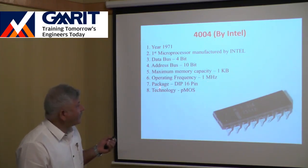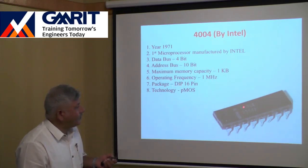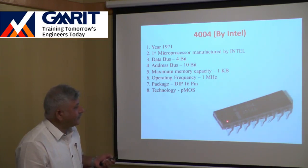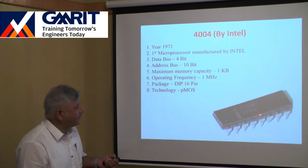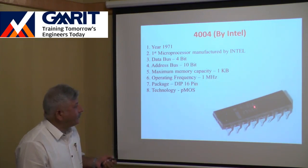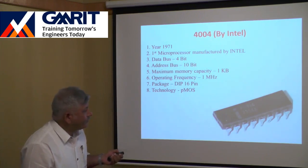The package used was a dual-in-line package (DIP), with pins on both sides. The total number of pins on the 4004 processor is 16. To find pin number 1, locate the notch on the IC, then find the dot near the notch — that marks pin 1.